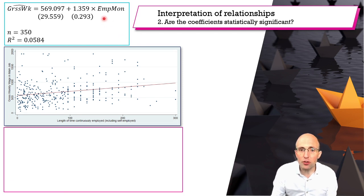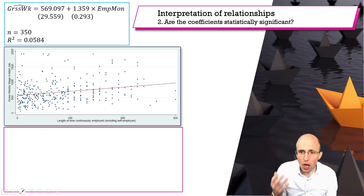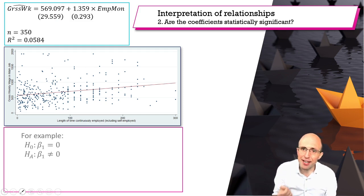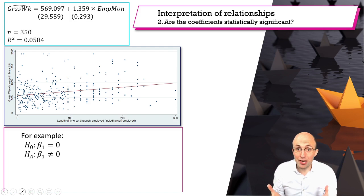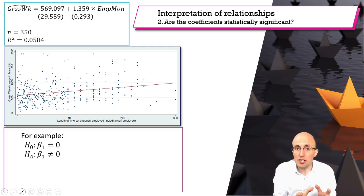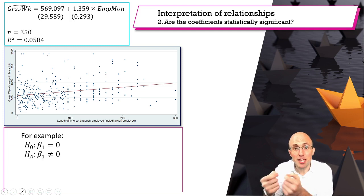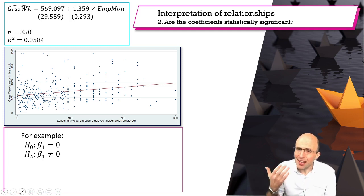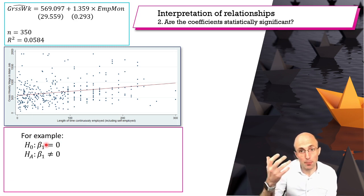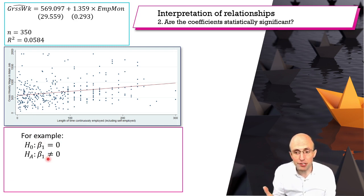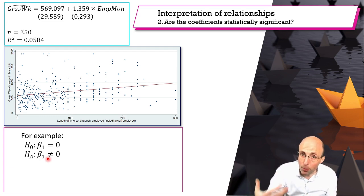Let's move on to step two and ask whether or not the estimated coefficients are statistically significant. Here I'm only going to focus on the slope parameter. We're asking: does the explanatory variable have any statistically significant impact on the dependent variable? That is, are months continuously employed having any statistically significant impact on gross weekly wage? This is equivalent to testing the null hypothesis that beta one equals zero against the alternative that beta one is non-zero.